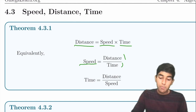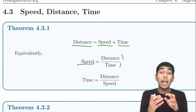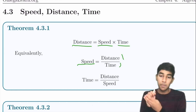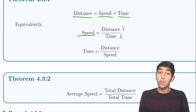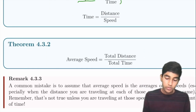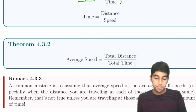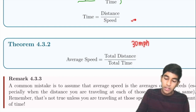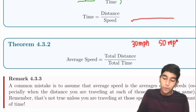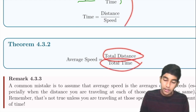Average speed is total distance divided by total time — you cannot simply average the two speeds. For example, going 30 mph one way and 50 mph back does not give an average speed of 40 mph. You must use total distance / total time.